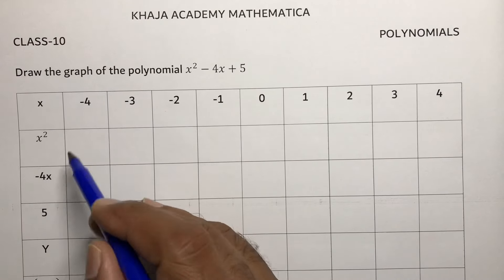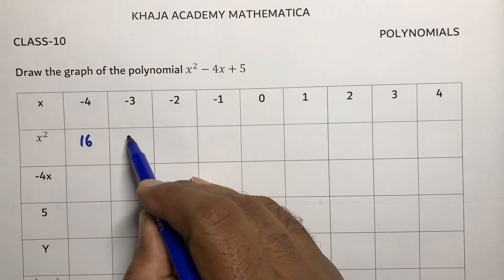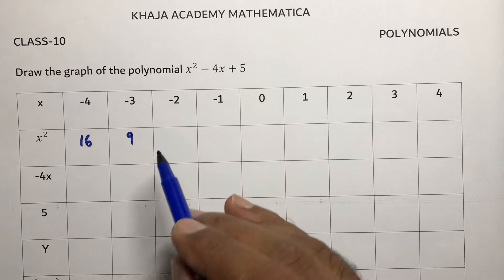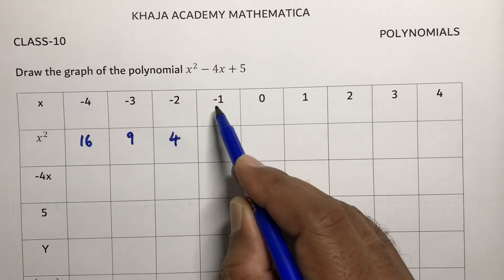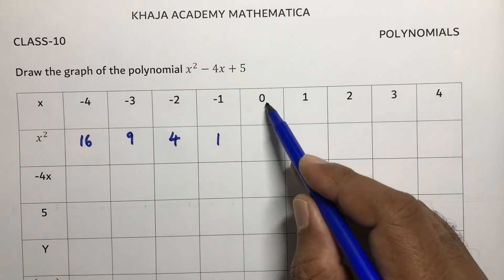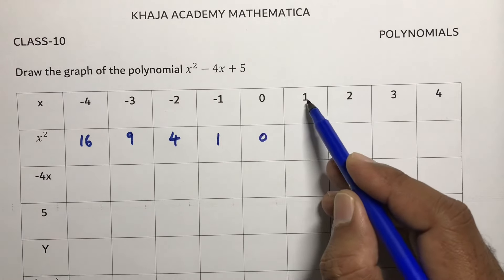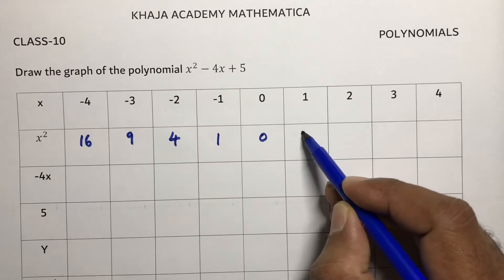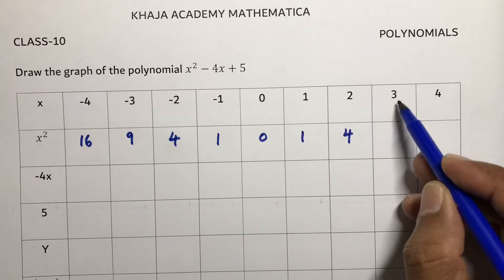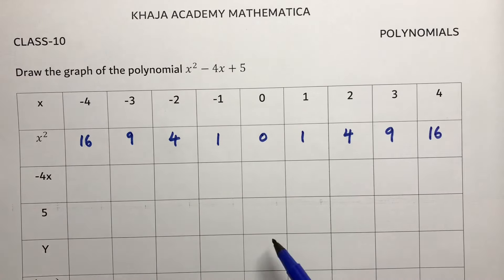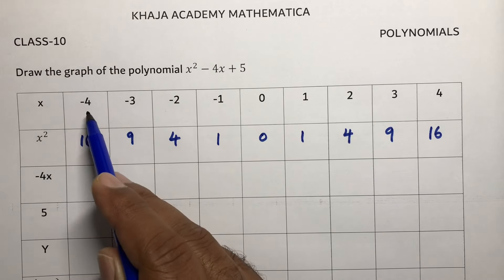For x = -4, x² = (-4)² = 16. For x = -3, (-3)² = 9. For x = -2, (-2)² = 4. For x = -1, (-1)² = 1. For x = 0, x² = 0. For x = 1, x² = 1. For x = 2, x² = 4. For x = 3, x² = 9. For x = 4, x² = 16.